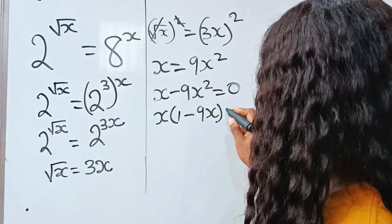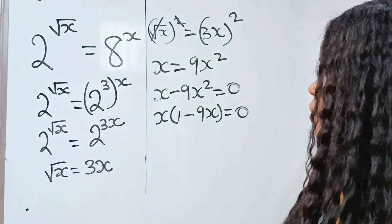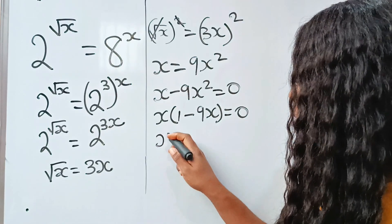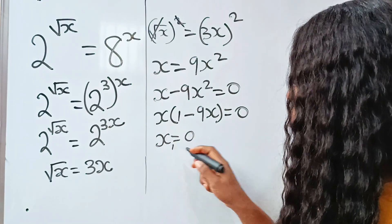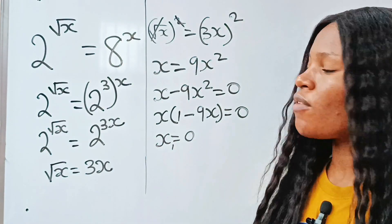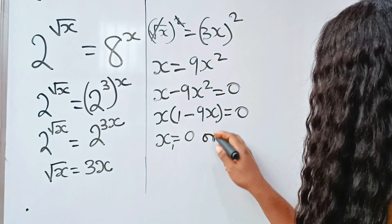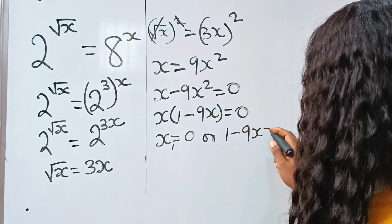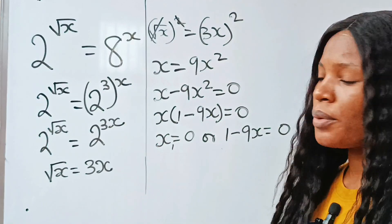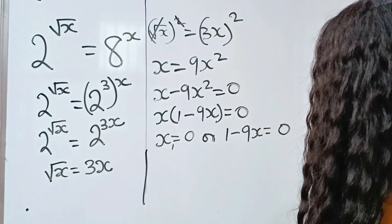Now x divided by x will give us 1. 9x squared divided by x will give us 9x is equal to zero. Now this simply means that x is equal to zero, so this becomes the first value of our x. Or 1 minus 9x is equal to zero.